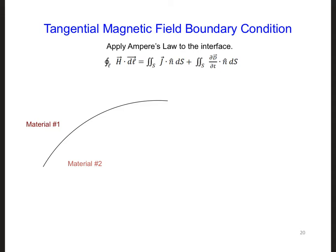We already determined the boundary conditions for the tangential electric fields. And so now we can determine the boundary conditions for the tangential magnetic fields using the same approach as before, except now we're going to apply Ampere's Law at the interface.